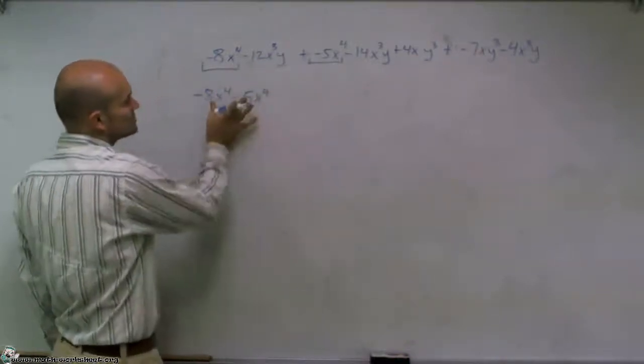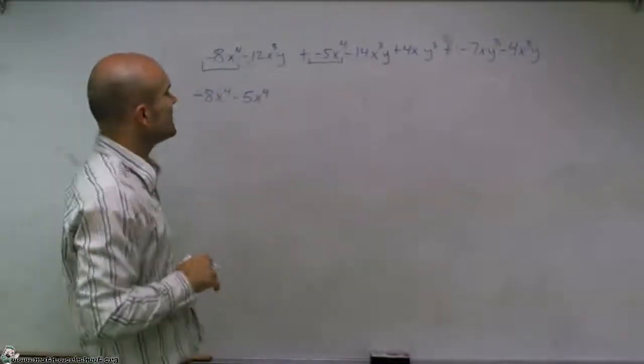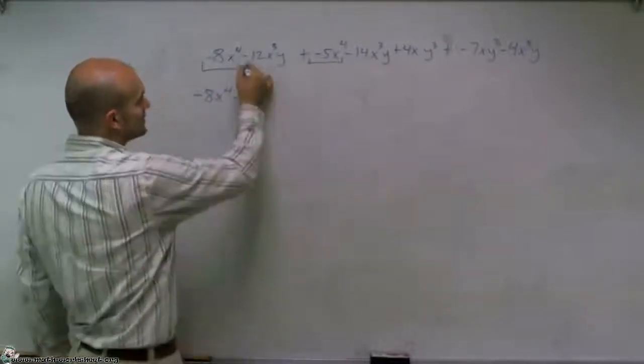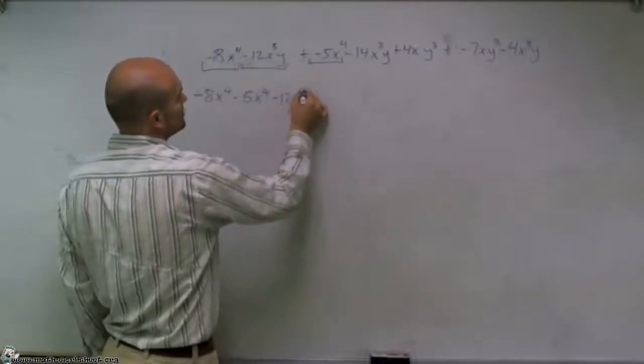So the first two terms I know I can combine are negative 8x to the fourth minus 5x to the fourth. Then I look at my next term. Well, that's going to be negative 12x cubed y.